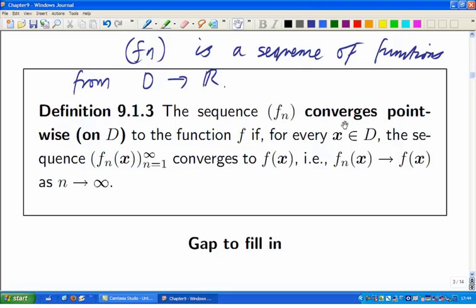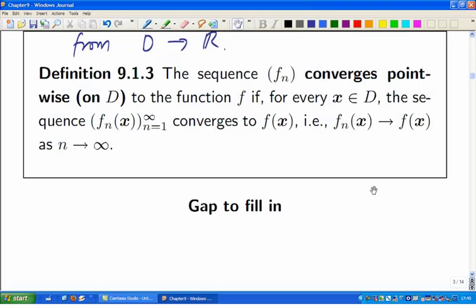So then, for each x in the domain, you get a sequence corresponding to x of real numbers. If you like, n can vary, x can vary. If you fix a particular x and let n vary, you get a sequence, fn of x as n goes from 1 to infinity. And now you can ask, does this approach the right limiting value, f of x? Does fn of x tend to f of x as n tends to infinity?